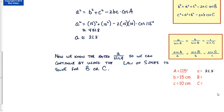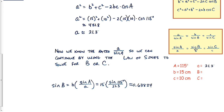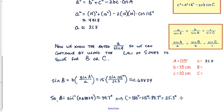We'll use the law of sines to calculate angle B. Sine of B equals B times (sine of A over A). With B equal to 15, angle A equal to 115 degrees, and side A equal to 21.3, sine of B comes out to approximately 0.63824.